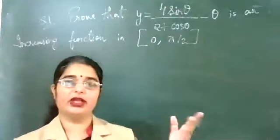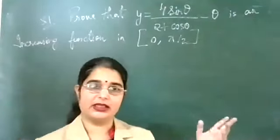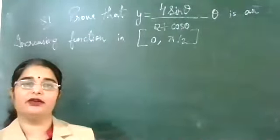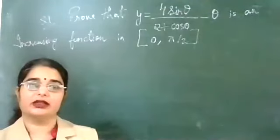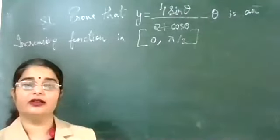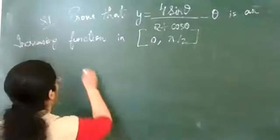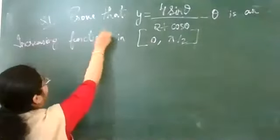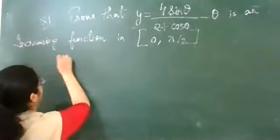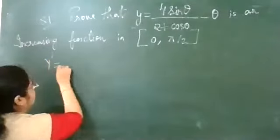For that also we have to find certain things. The first step every time is to get the differentiation of this particular function. So when we have y equal to this function, y-dash would be equal to... we are applying the quotient rule since we have a numerator and denominator.